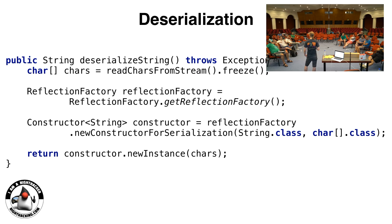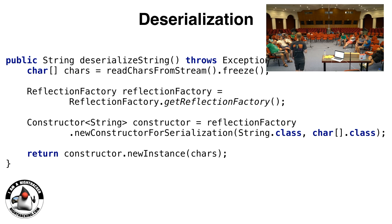Whenever we talk about serialization and deserialization, this is always something that's in our forebrains — which is when you deserialize some bytes off the wire, you cannot trust those bytes. How do you deal with that? There's a blanket statement in the coding guidelines that says don't trust bytes you get off the wire — deserialization.